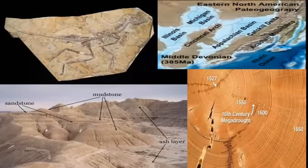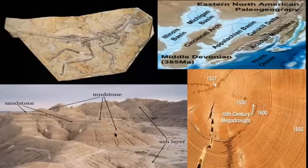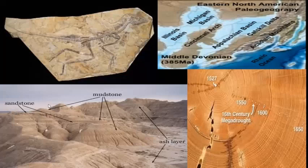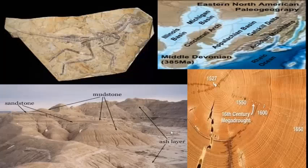Looking at a microtopography example showing ash layer, mudstone, and sandstone within a single place: the ash layer suggests volcanic activity in the area's history, meaning igneous rocks are present. During various geological epochs, different things occurred. To understand the whole geomorphology of the present-day landform, we must understand its past. This concludes the fundamental concepts of geomorphology.